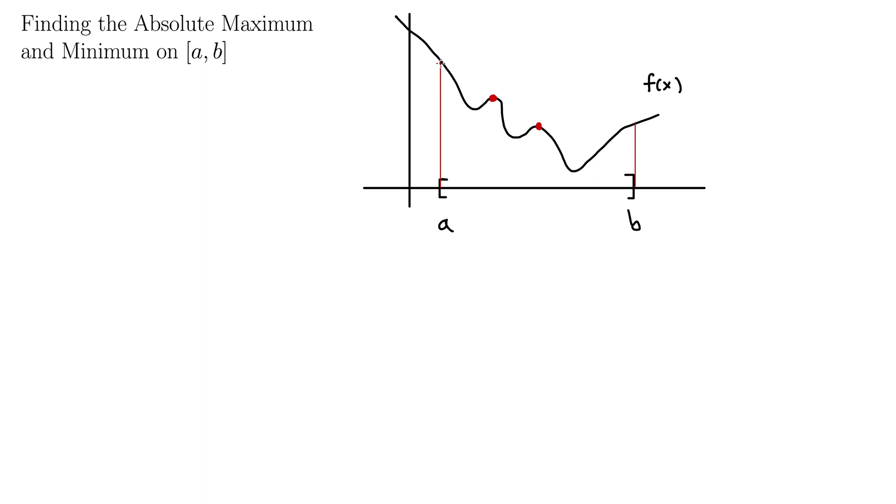Tracing the endpoints, a and b up, we see that we actually, here at a, we get a higher point. Not so much on b, b doesn't really do much for us. But on a, we clearly get the highest point of this function on the interval [a,b]. So there is our absolute maximum.